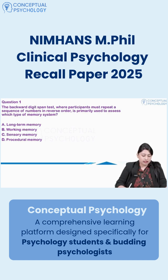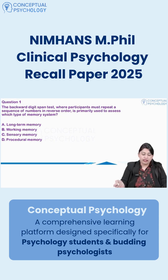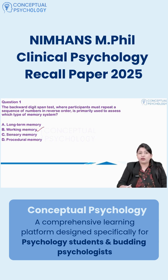The first question is the backward digit span test, where participants must repeat a sequence of numbers in reverse order — this is primarily used to assess which type of memory system. The correct answer is that the backward digit span test primarily measures working memory, specifically the central executive component of Baddeley's working memory model.